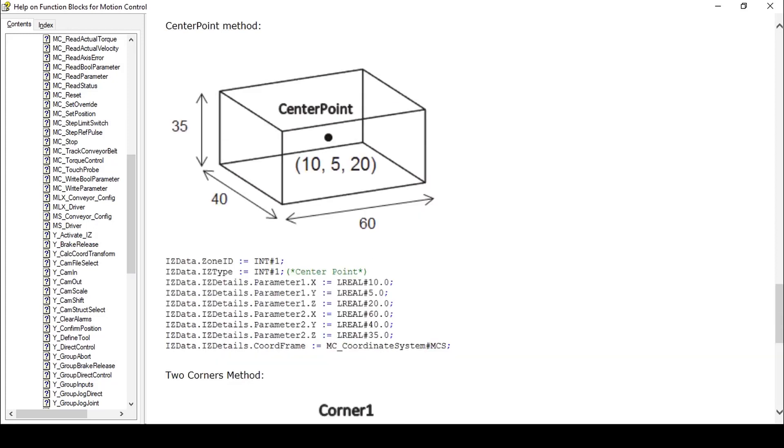Center point uses the x, y, and z coordinates of the center point as well as length, width, and height of the cuboid. Both methods support the rotational components of the cuboid using parameter 1 with mechatrolink groups only.